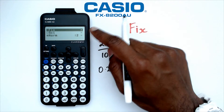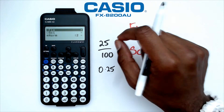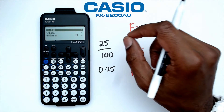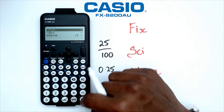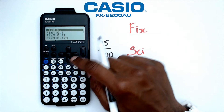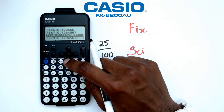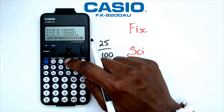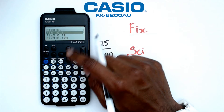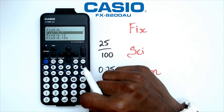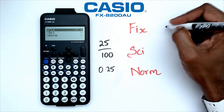Now let's say we go into fix mode — we can actually fix the number of decimal places. So for example, if I go into fix, I'm going to have up to nine different options, so that's up to 9 decimal places. Let's go to 1 dp, so fix 1.